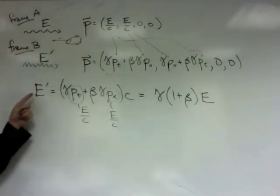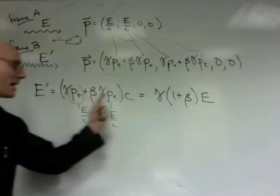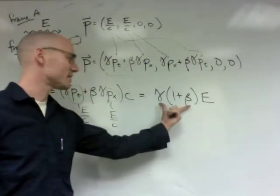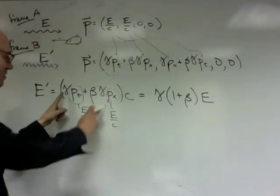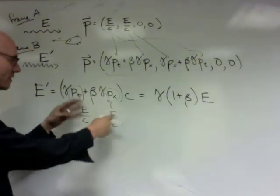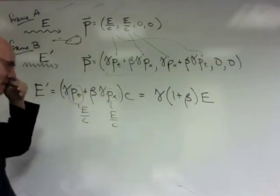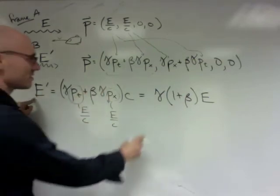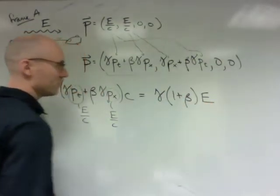So the energy in the new frame is the same as the energy of the old frame, except for this dimensionless factor, because there are gammas here and there's a beta here, and these are both the same. So we pulled out the E's, divided out the C's. And the new energy is related to the old energy by gamma one plus beta.